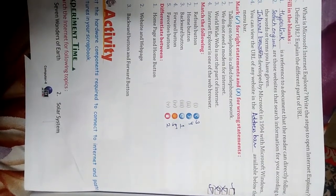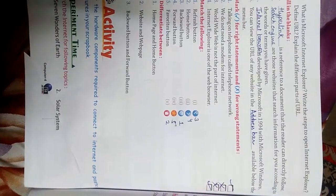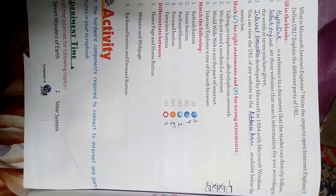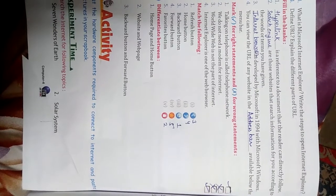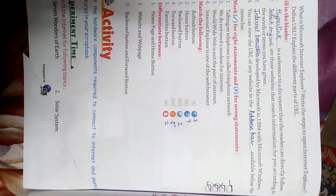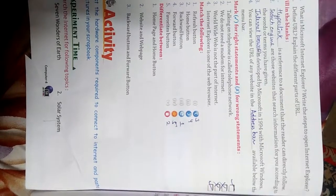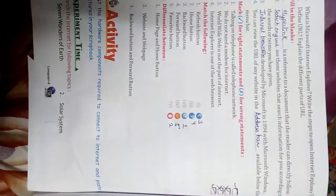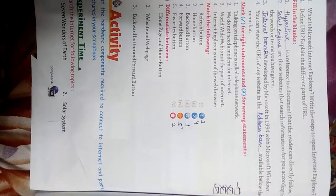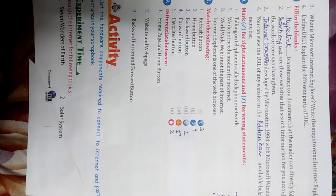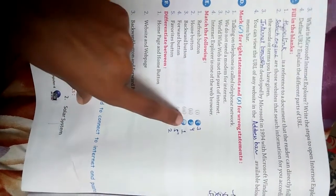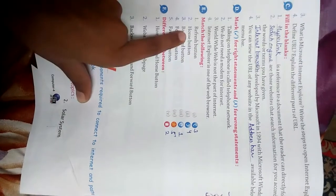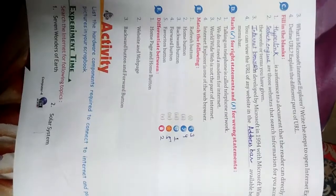True or False: Talking on a phone is called telephone network — correct, true. We don't need a modem for internet — false. World Wide Web is not a part of internet — false, it is a part of internet. Internet Explorer is one of the web browsers — correct, true. Match the following: the refresh button, home button, backward button, forward button, and favorites button are matched to their respective icons. Thank you.